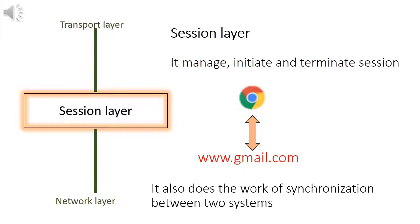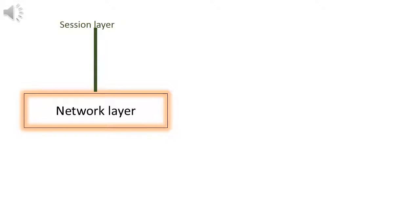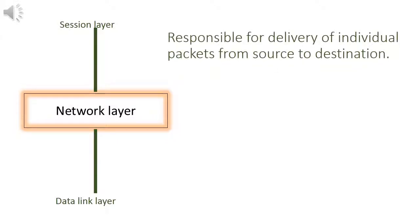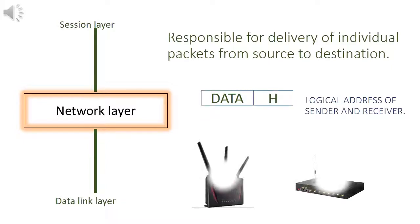Then data is sent to network layer. Network layer is responsible for delivery of individual packets from source to destination. It adds header to data packets. The header defines the logical address of sender and receiver. Routers and gateways operate in network layer. After network layer, data passes through data link layer.